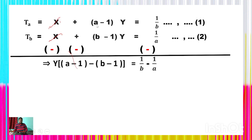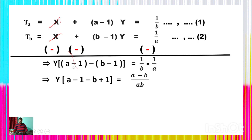Taking y as common factor: y × (a−1−b+1) = 1/b − 1/a. After removing the bracket, minus into minus gives plus 1. So y × (a − b − b + 1) simplifies: y × (a − 1 − b + 1) = (a−b)/(ab). The minus 1 and plus 1 cancel.